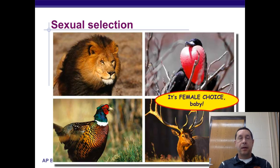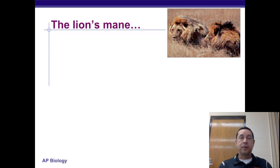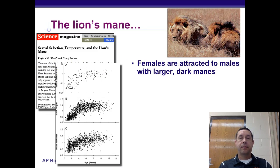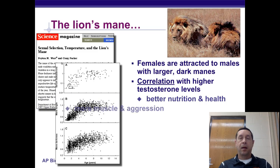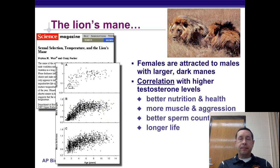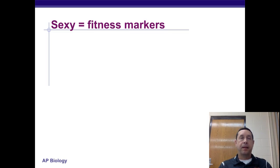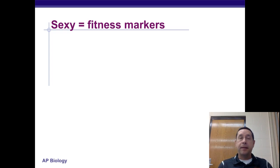In the animal kingdom, it's usually the females that do the choosing of males based on certain traits. Lions' manes and color are one example — larger, darker manes correlate with higher testosterone, which indicates better nutrition and better health. But this can impose a cost to males because they're hot and may not blend as well with the environment. So sexiness, if you will, is a fitness marker: if you're able to attract a mate, you're more likely to pass your genes on to your offspring.